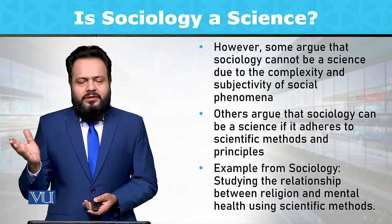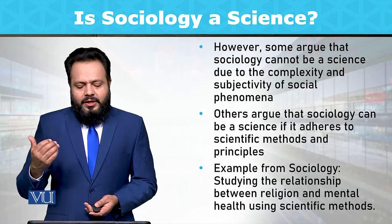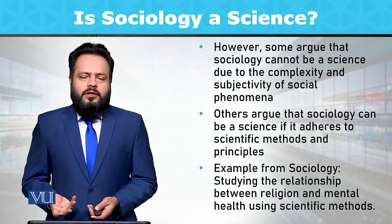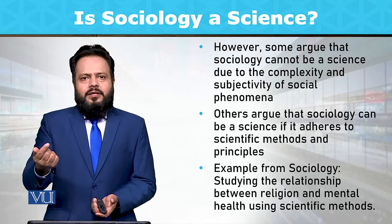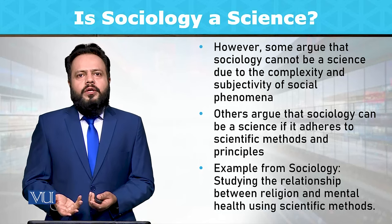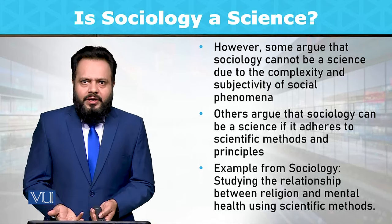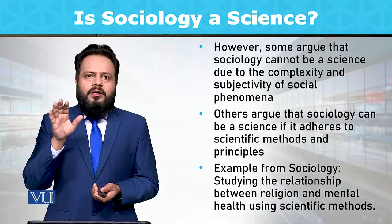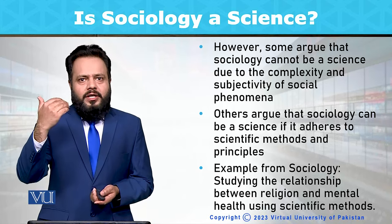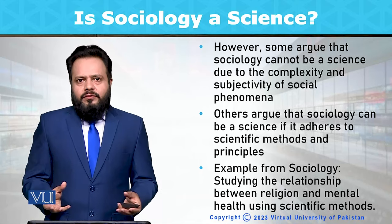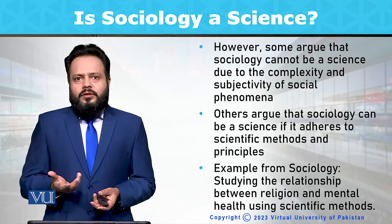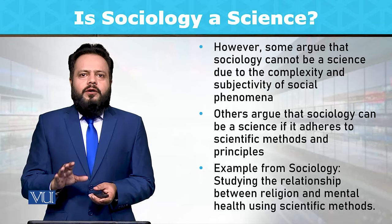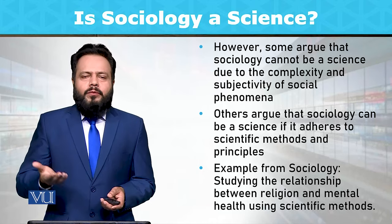Others argue that sociology can be a science if it adheres to scientific methods. For example, studying the relationship between religion and mental health using the scientific method is an observable phenomenon. Religion can have a very positive effect on spirituality, and mental health issues are relatively lower among those with higher levels of religiosity. In this way, treating such phenomena as empirically testable, sociology bases itself on empiricism and uses the scientific method just like other sciences.